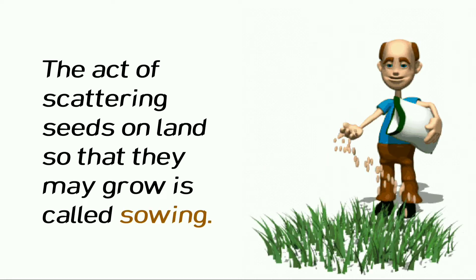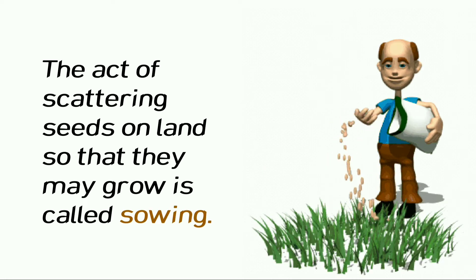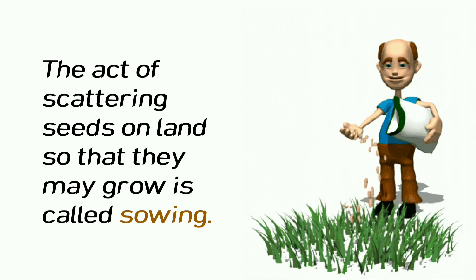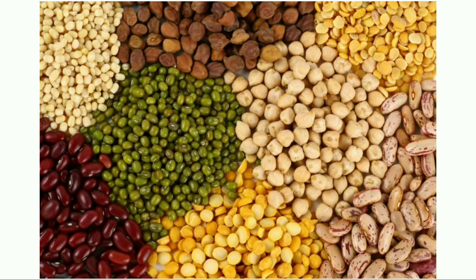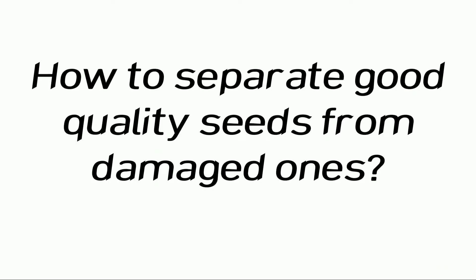The act of scattering seeds on land so that they may grow is called sowing. Before sowing, good quality seeds should be selected — but how do we separate good quality seeds from the damaged ones?